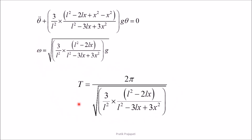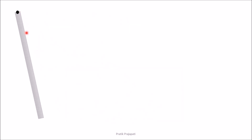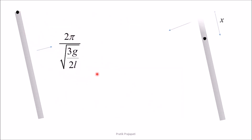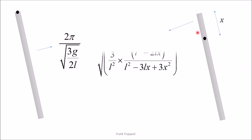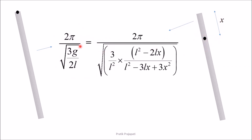Now we compare the equation for the time period of oscillation of the rod when hinged at distance x from the top with the original time period when hinged at the top. Finally, by comparing both expressions, we get x equal to l divided by 3.